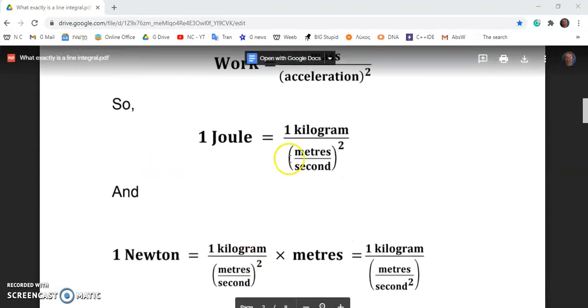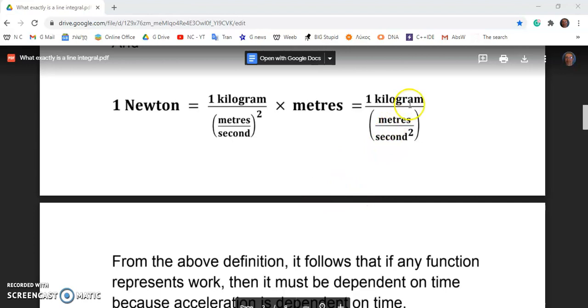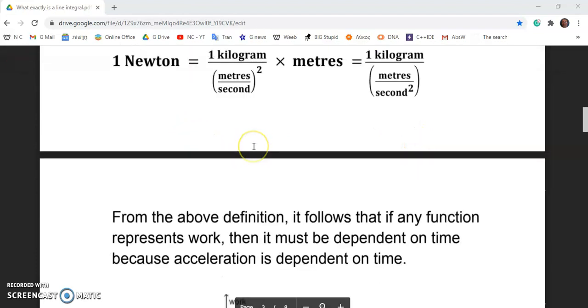And of course, work is equal to mass divided by acceleration squared. So we can see from this relation here that work is a function of time and so is a joule. And we can see that if we multiply these two together, we'll get a Newton. And a Newton is expressed as a kilogram in terms of meters per second squared.